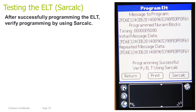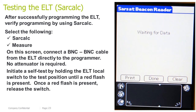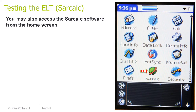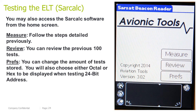Testing the ELT using the SARcalc software: after successfully programming the ELT, verify programming by using SARcalc. Select SARcalc > Measure. On this screen, connect the BNC-to-BNC cable from the ELT directly to the programmer — no attenuator is required. Initiate a self-test by holding the ELT local switch to the test position until a red flash is present, then release the switch. A report will be generated that will match the option you programmed. You may also access the SARcalc software from the home screen. Measure follows all the steps detailed previously. Review: you can review the previous 100 tests. Preferences: you can change the amount of tests stored and choose between octal or hex address display when testing a 24-bit address.